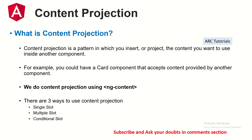To make use of content projection we use the ng-content element to project content into another component. There are three ways to use content projection. This is also a topic often asked in interviews. Number one is single slot — whatever content you send goes into a particular slot. Multi slot means you can send multiple sets of content. Conditional slot means based on certain conditions the data will be rendered.